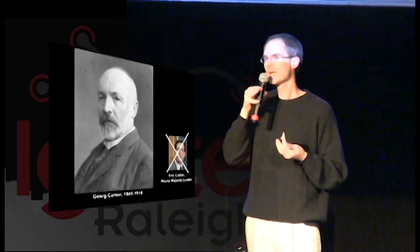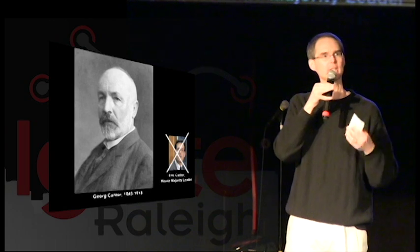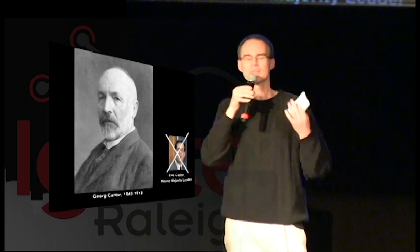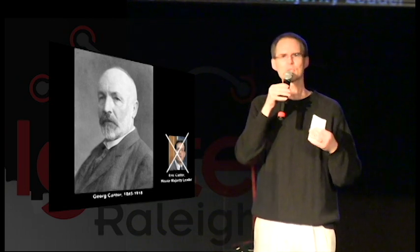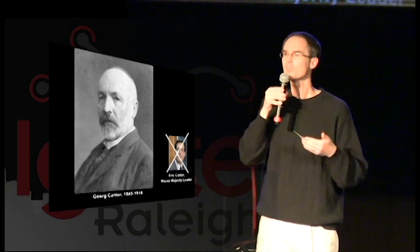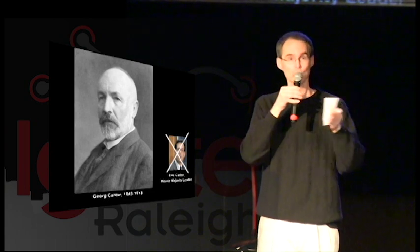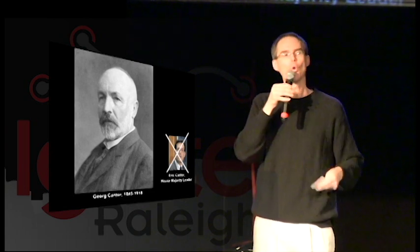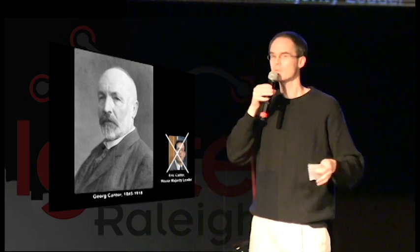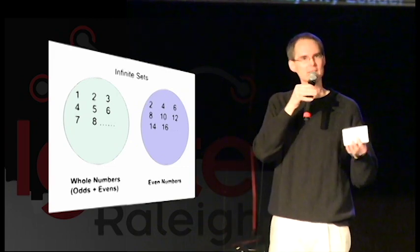There was this one guy back then named Georg Cantor, and he was really interested in infinity. But Cantor wasn't really interested in an infinite number of rectangles under a curve. He was interested in something called infinite sets — that is, sets that have an infinite number of things in them. Like, for example, the set of all the whole numbers: 1, 2, 3, 4, 5, 6, 7, and on and on. Or maybe the set of all the even numbers: 2, 4, 6, 8, 10, 12, etc. And in particular, he was interested in the sizes of infinite sets.